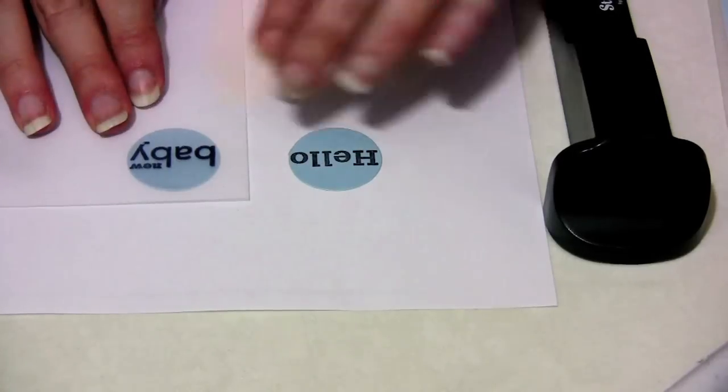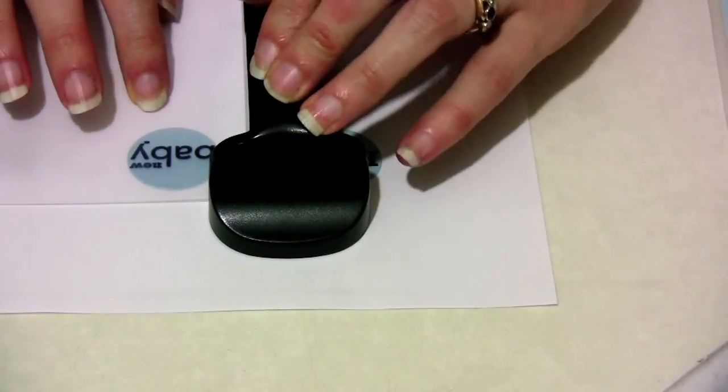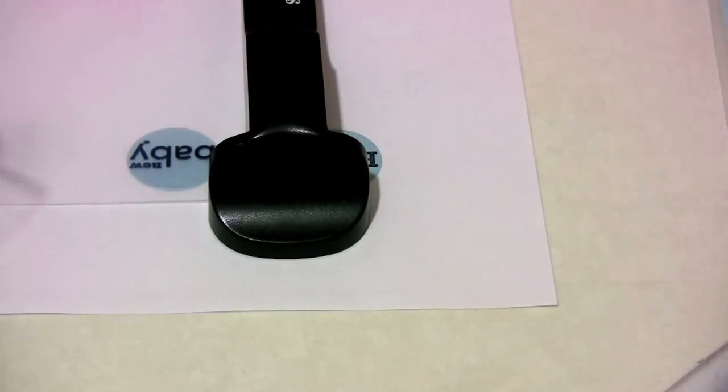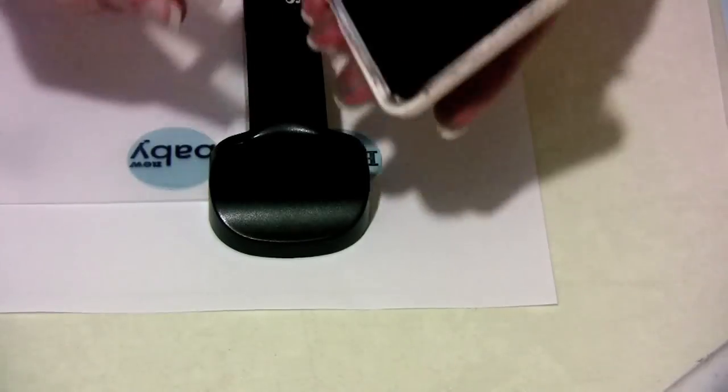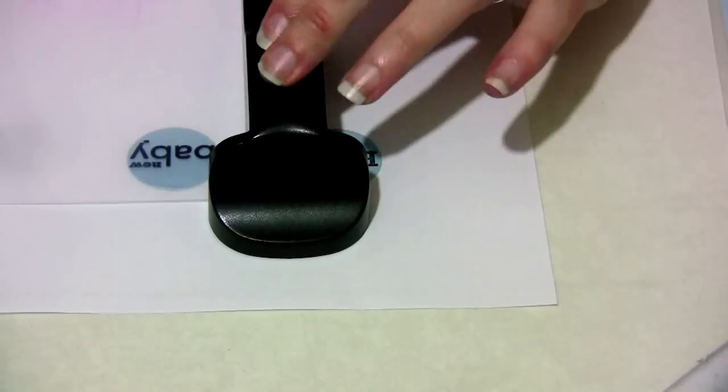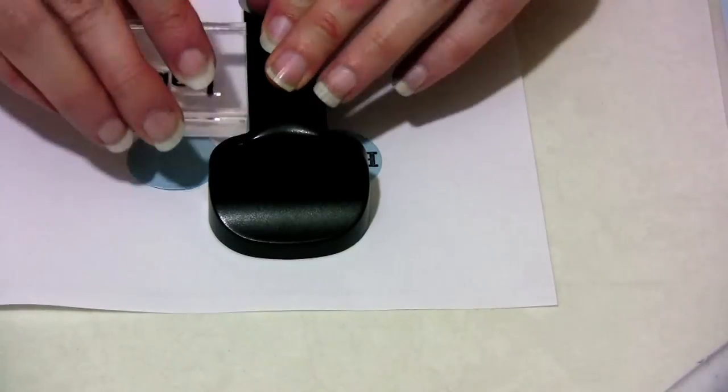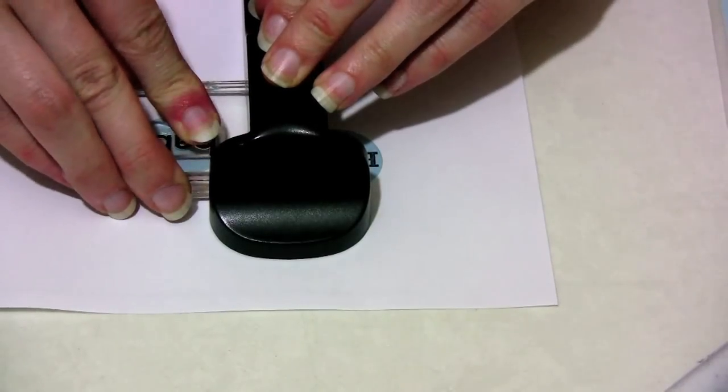Take the corner of the Stamp-a-ma-jig, put it into place, and then ink up your stamp again. By holding the Stamp-a-ma-jig in place you can remove the plasma and just repeat. Put the corner of the acrylic block into the corner of the Stamp-a-ma-jig and press down.